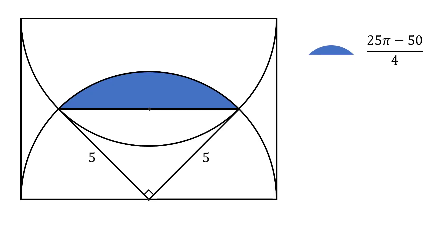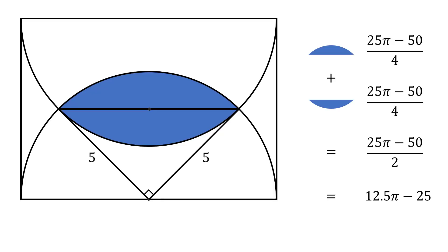Then, to get the entire area of the overlapping region, we need to double this area. So we add this area to itself, and we get exactly the area of the shape that we want. This simplifies to be 12.5 pi minus 25, which is approximately equal to 14.27. And that's the answer.